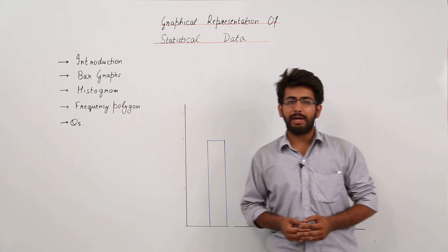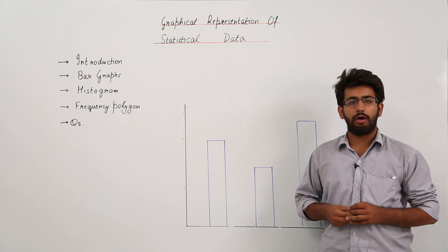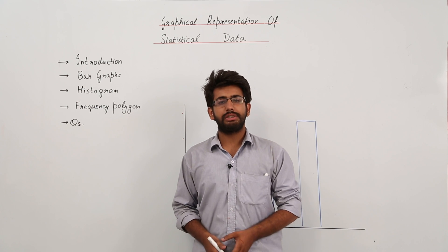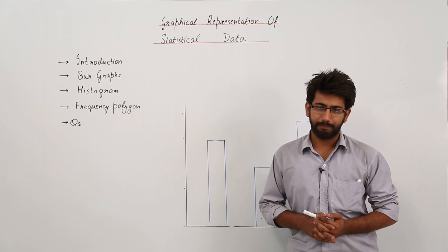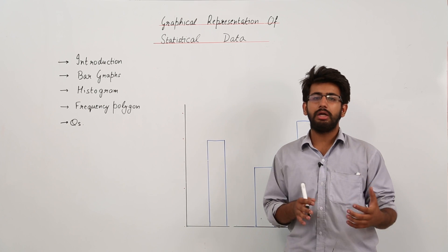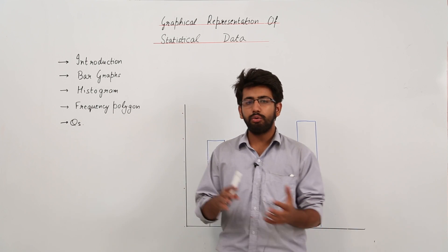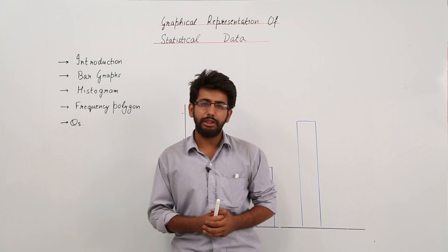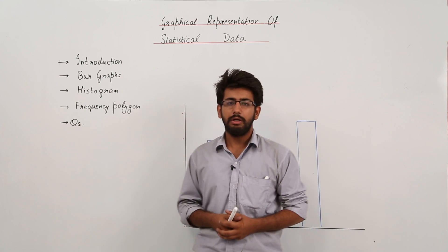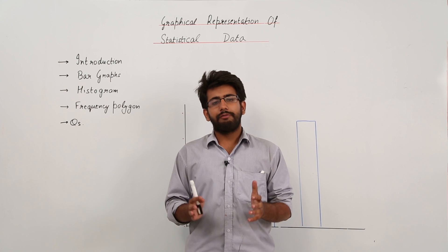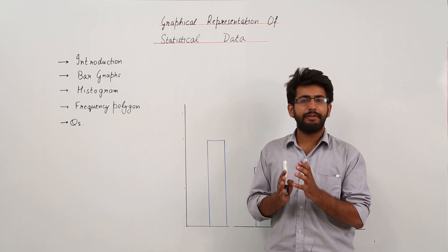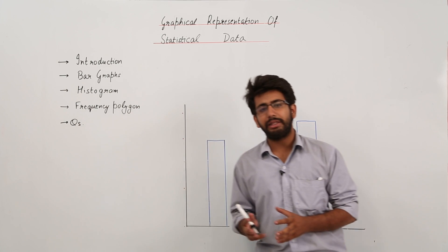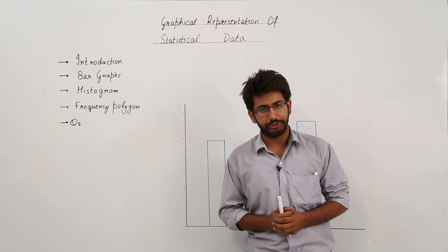Welcome students to the new chapter: graphical representation of statistical data. We have already covered the basics in the previous chapter on frequency distribution, where we learned how to convert raw data into a well-managed table — the tabular form. Now when the data is very large, it becomes difficult to interpret in tabular form, so we follow the method of graphical representation.